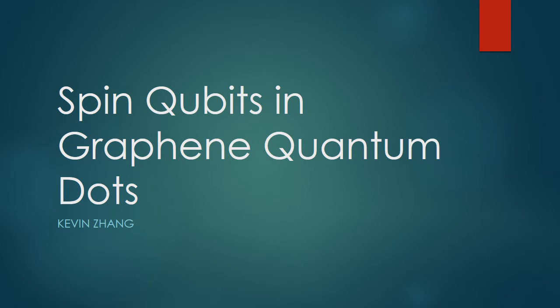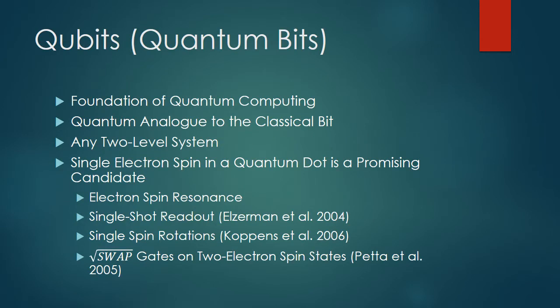This presentation is going to be about spin qubits in graphene quantum dots. Quantum bits, or qubits for short, form the foundation for quantum computation. They are the quantum analog to the classical bits of ones and zeros, and can be created using any quantum two-level system.